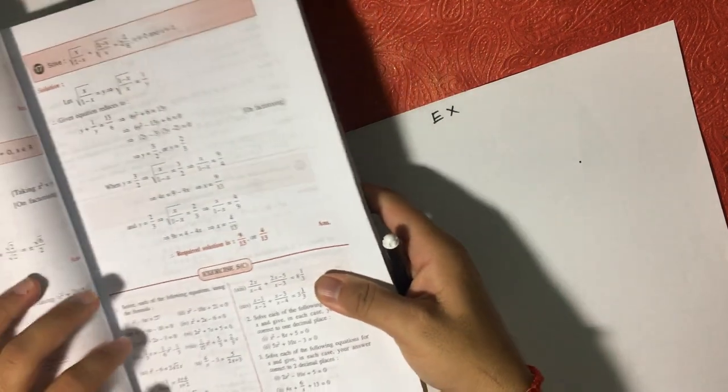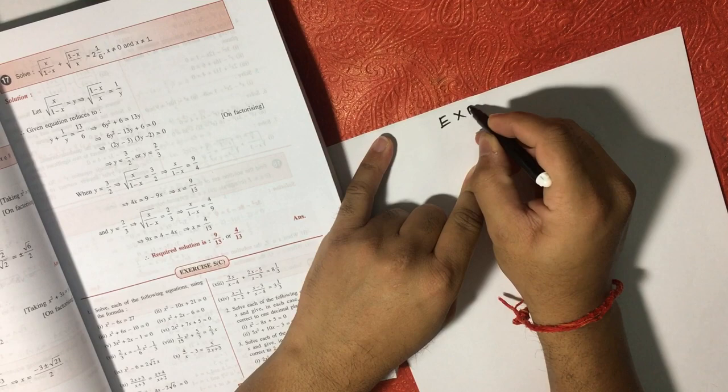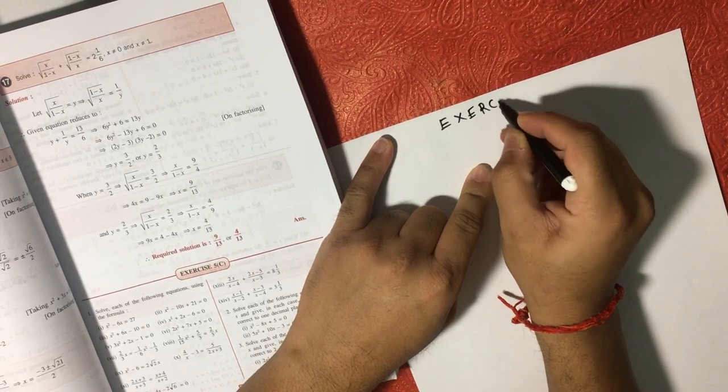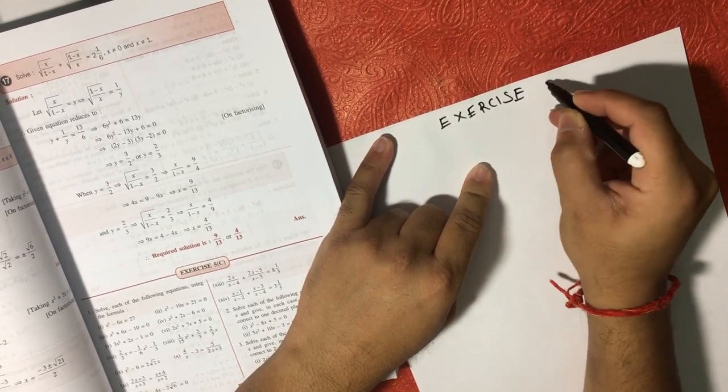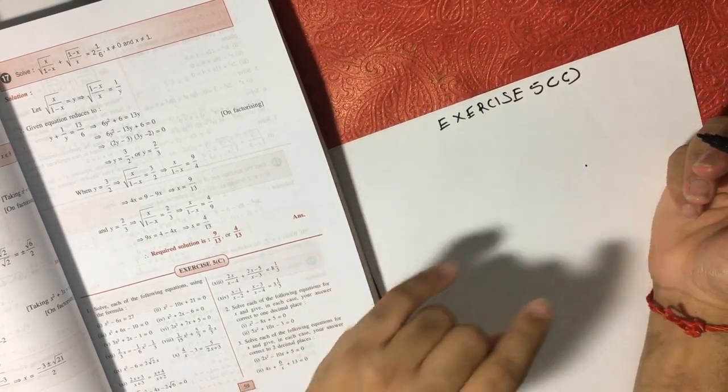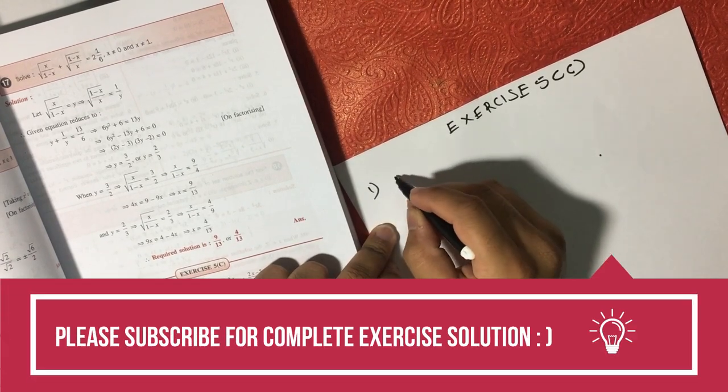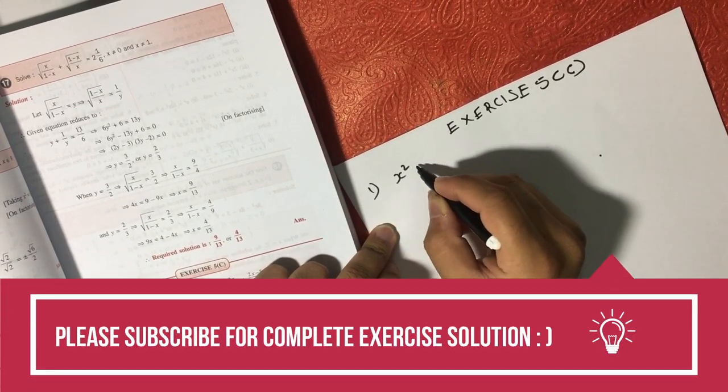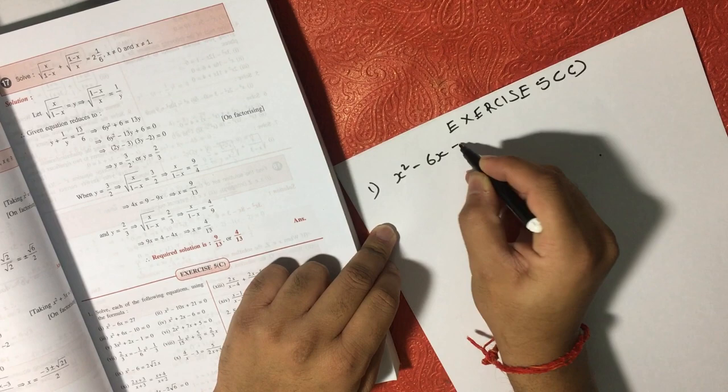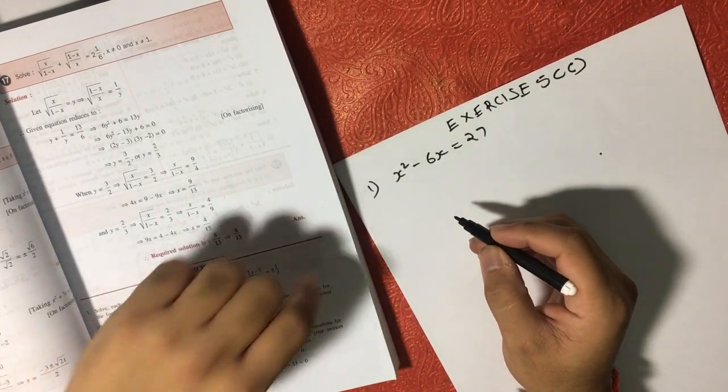First equation is, let me write the exercise: Exercise 5C. Question number 1 is x square minus 6x is equal to 27. So this is the equation which we need to solve.